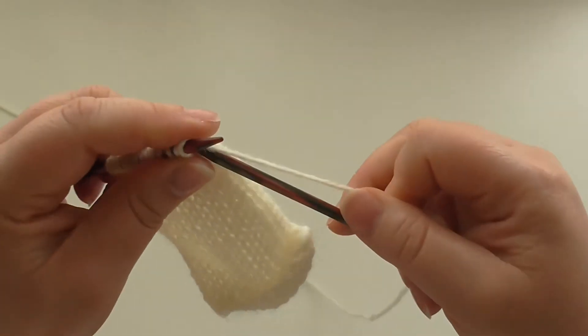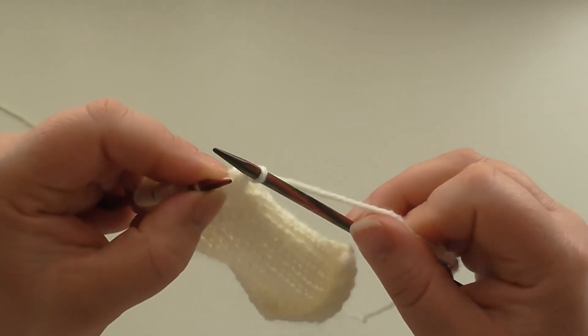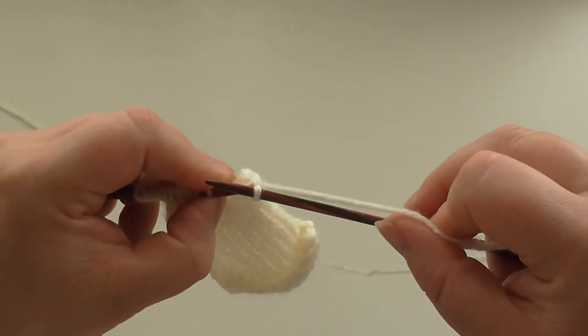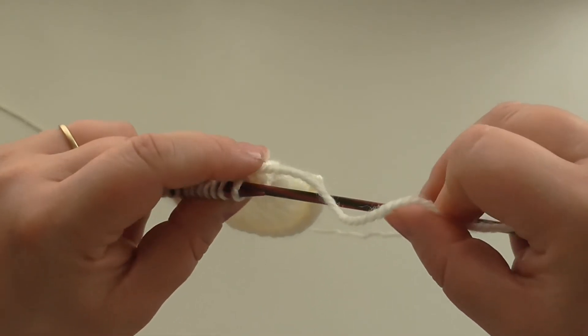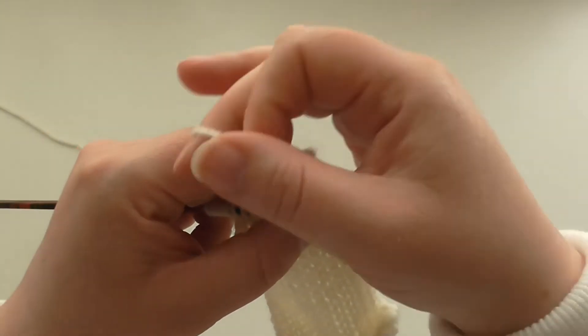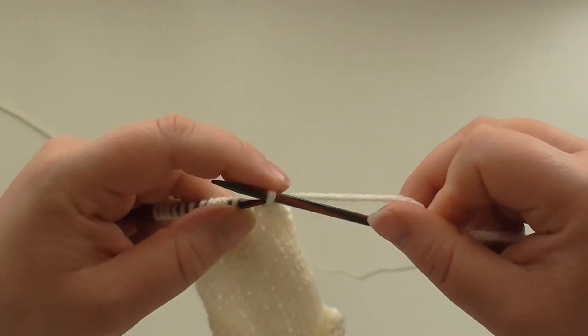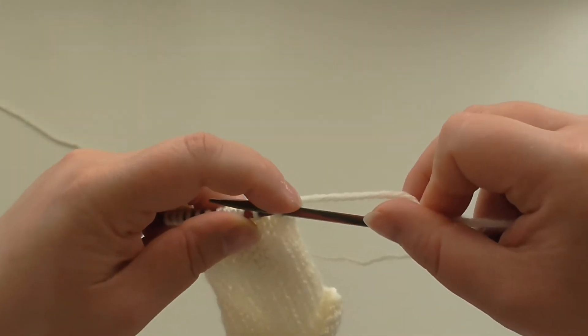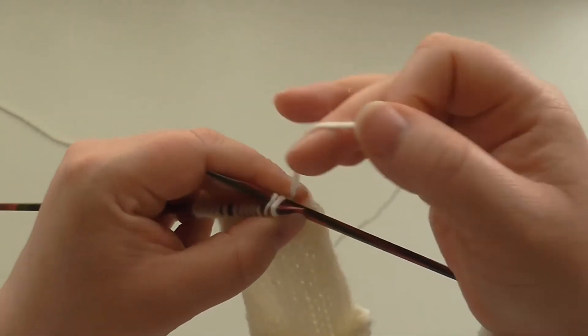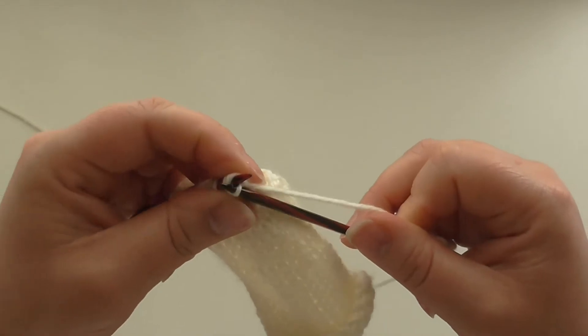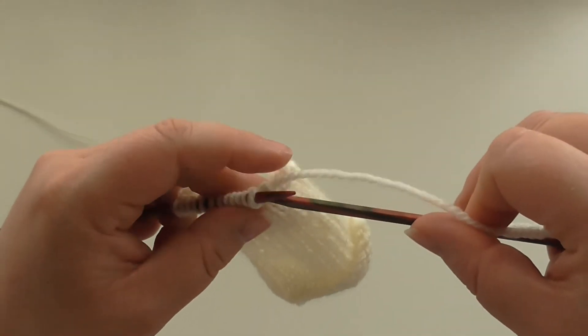And knit through the back of the loop. We keep returning the first stitch that we just knit back onto the other needle, to the left needle like that, and knit through the back of the loop.